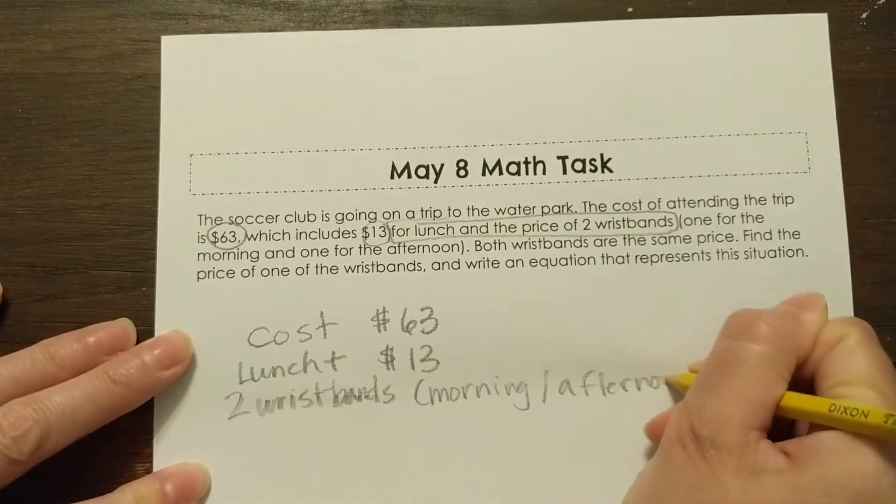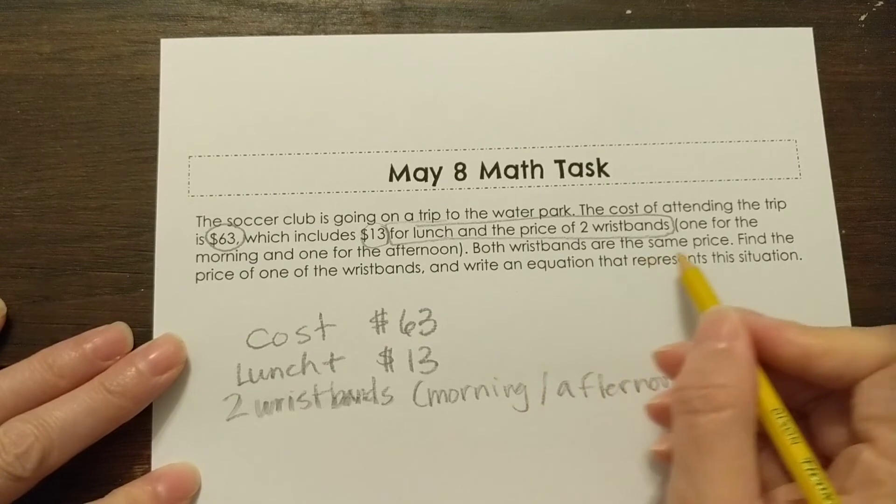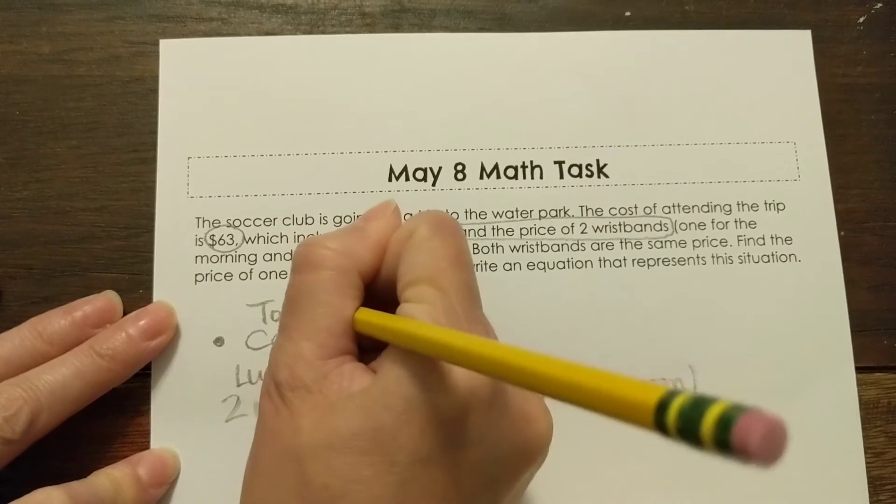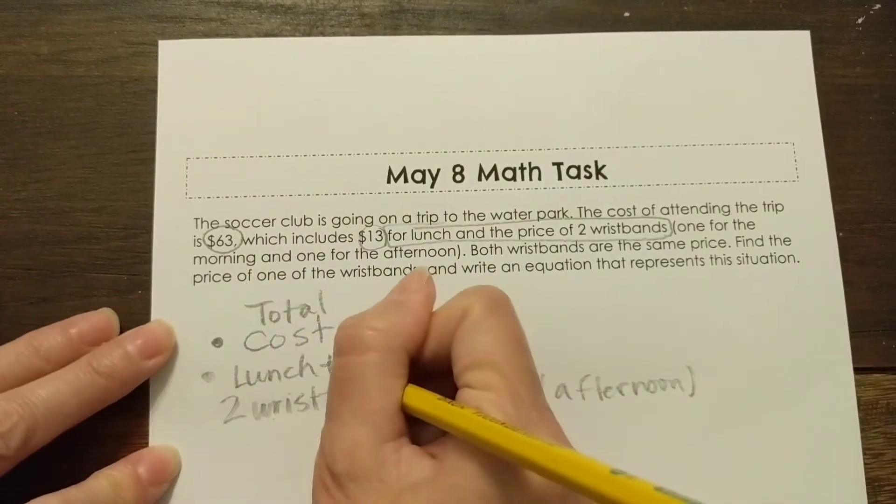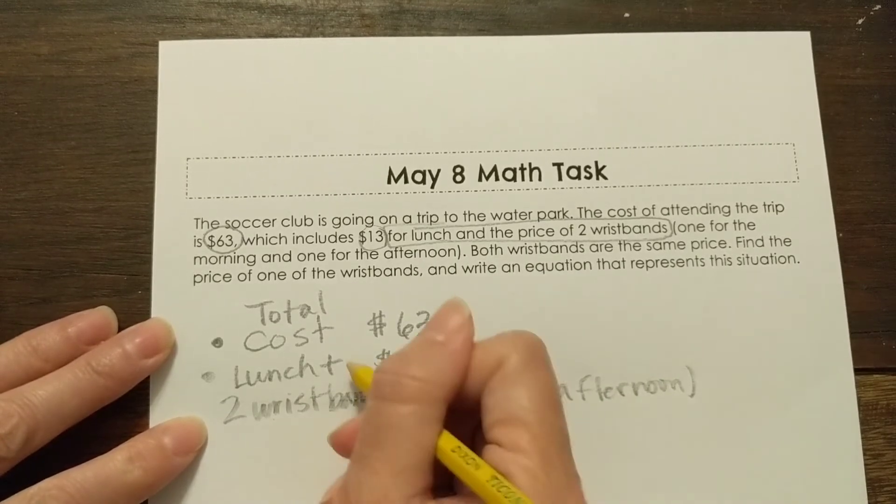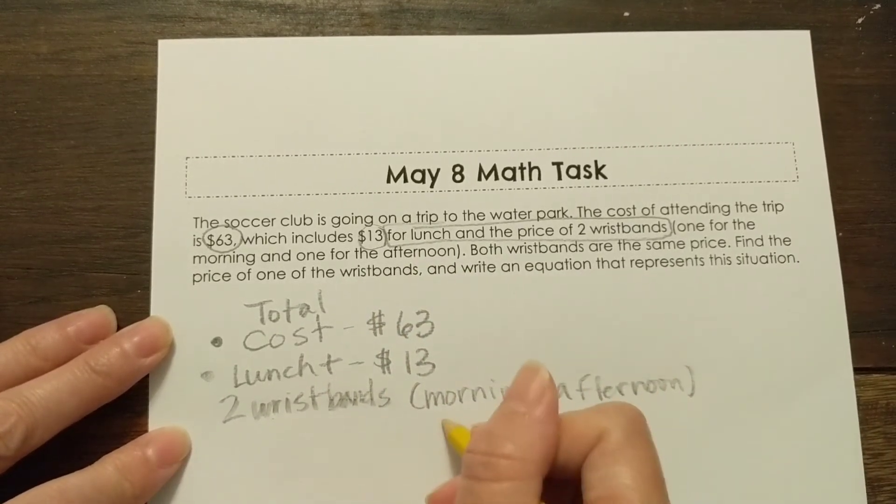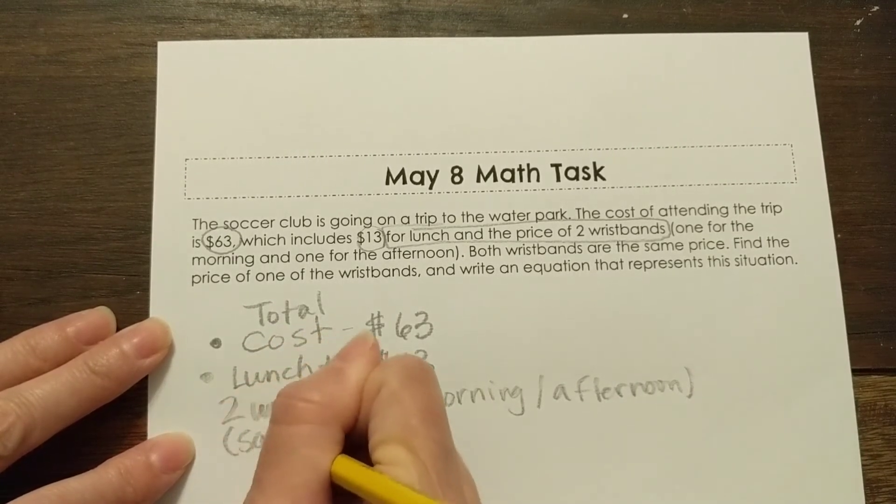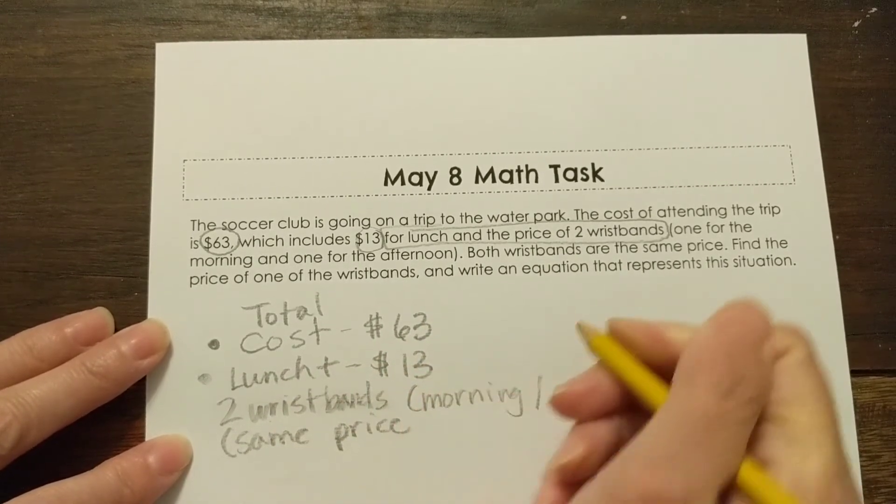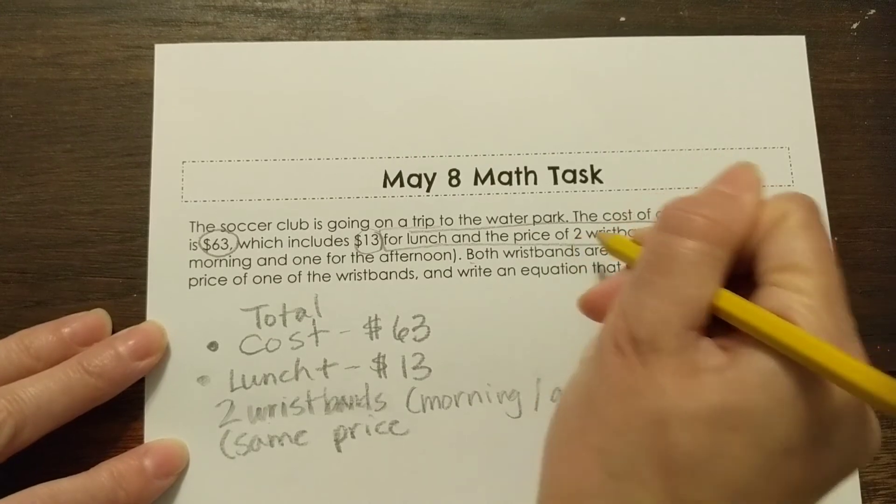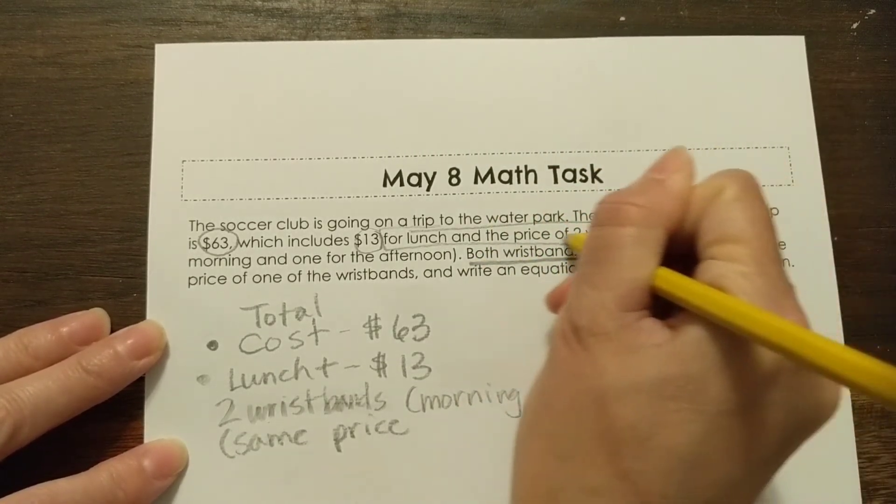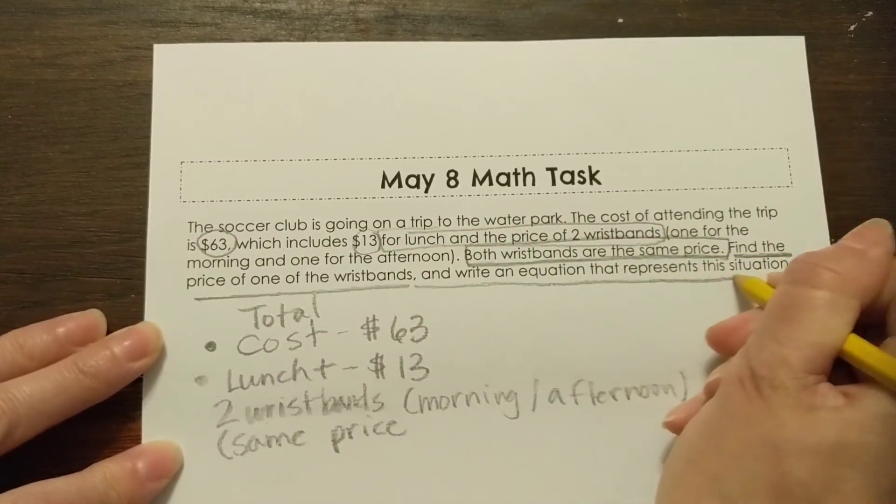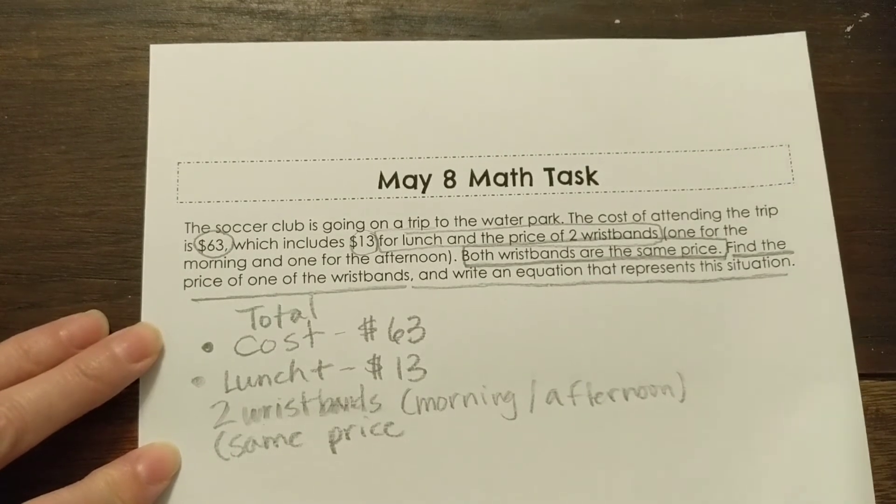Alright. One in the morning and one in the afternoon. So these wristbands are for morning and afternoon. So they have the whole day worth of wristbands. Both wristbands are the same price. So I also know, I know the total cost is $63. That lunch plus two wristbands is $13. And that the wristbands last for morning and afternoon. And that they are the same price. So this is the information that I know.